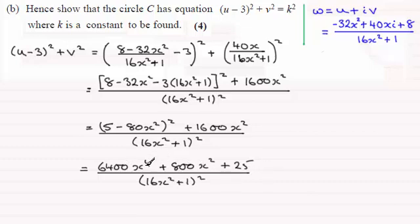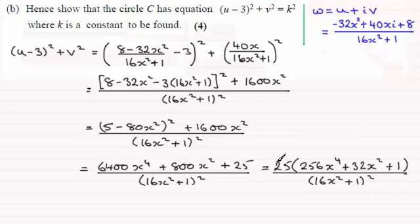Now in order to get a constant squared I've got to assume that in some way or another (16x² + 1)² must feature in here. But I notice that 25 is first of all a common factor of each of these terms and if I pull out that 25 then we get this.